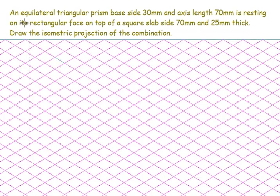Hello students, let's see one more problem here. An equilateral triangular prism - remember this is prism not pyramid - base side 30mm and axis length 70mm, resting on its rectangular face. This is important: you're not going to rest it on triangular face, you're going to rest it on rectangular face on top of a square slab.